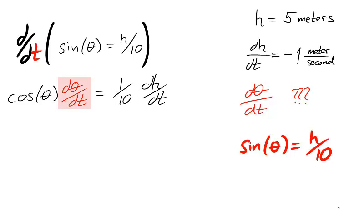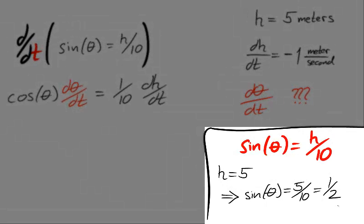We're searching for d theta dt when h is equal to 5 and dh dt is equal to negative 1. We can use our original relation to determine theta. When h equals 5, we have sine theta is equal to 1 half. The question is, what is theta? As the drawbridge lowers through a quarter circle, we can assume that theta is in the first quadrant. Therefore, theta must be pi over 6 when h is 5.